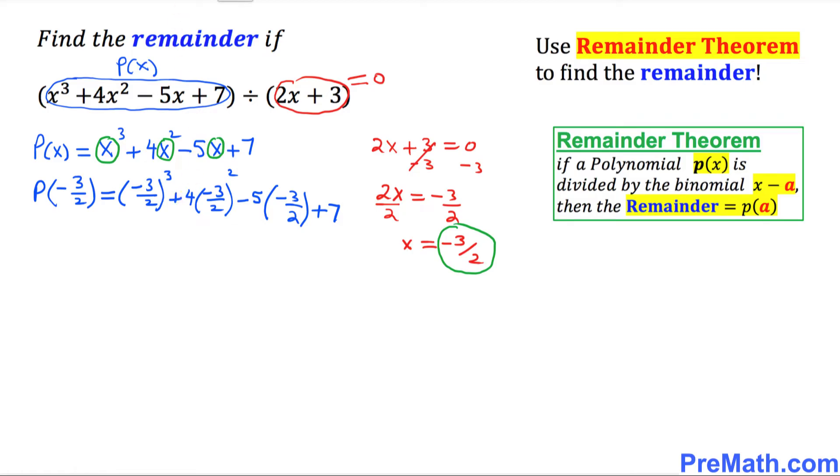Let's simplify furthermore. We're going to take care of this exponent. Negative 3 power 3, since the power is odd, we keep the negative sign. So it becomes negative 27 divided by 8. And here plus 4 times negative 3 over 2 squared becomes 9 over 4, and here negative and negative become positive 15 over 2 plus 7.